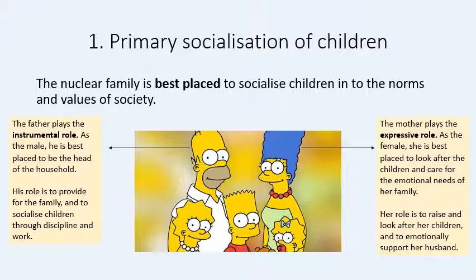Parsons argues that when both of these roles come together, you have well-rounded socialisation — children who are adequately cared for by the mother and adequately provided for and disciplined by the father. This is why Parsons argues that only the nuclear family can do this: a lone parent family would only have a father or only have a mother, missing one half of this socialisation.